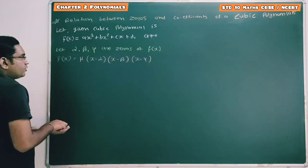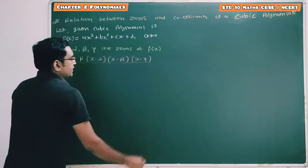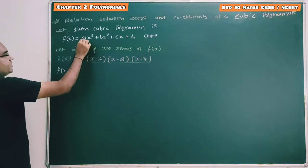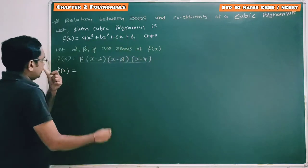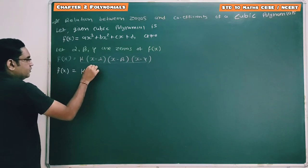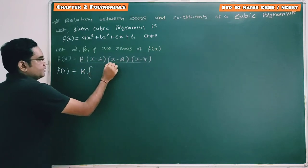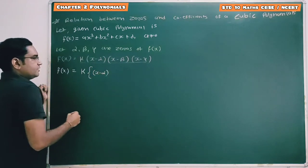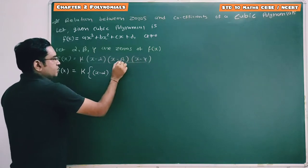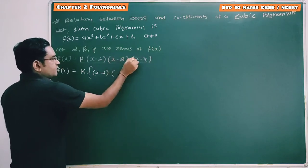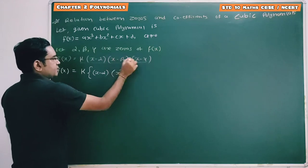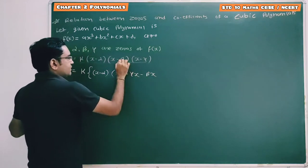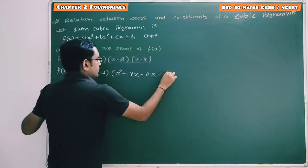So that polynomial can be written as the product of those factors, multiplied by one non-zero constant. Now we have to perform expansion of this right-hand side. So f of x is ax cube plus bx square plus cx plus d, which will be equal to k into x minus alpha, multiplied by x minus beta into x minus gamma. That gives x square minus gamma x minus beta x plus beta gamma.